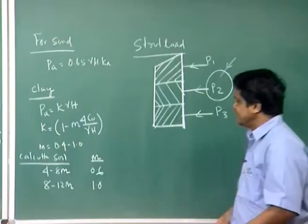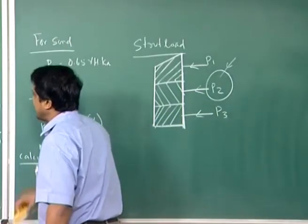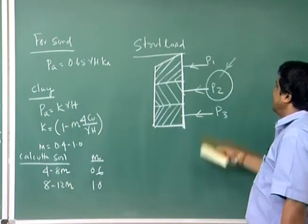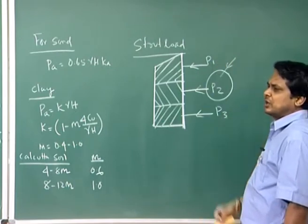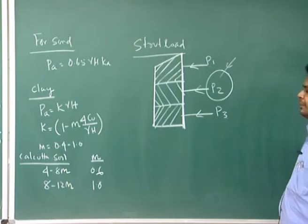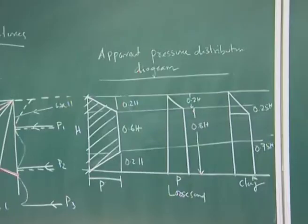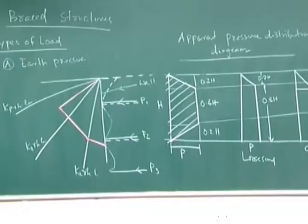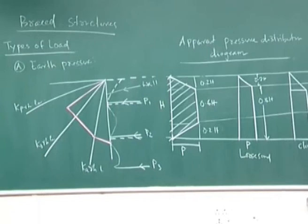Once this part of your earth pressure distribution diagram is done, from there you find your load on the strut. Then from this load on the strut, the maximum load on the strut means the design has to be done for the maximum load on the strut. Now, what are the major effects or major concerns of the braced cut? Before we solve an example, what are the major effects of braced cut?